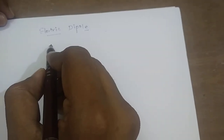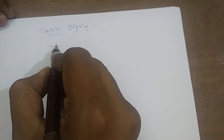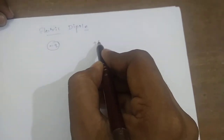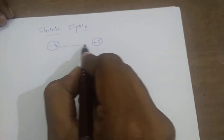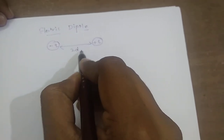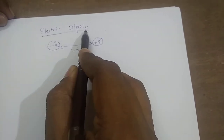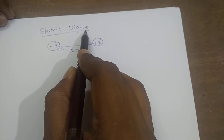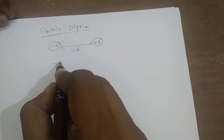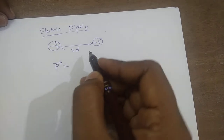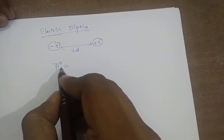First of all, some introduction. What is called an electrical dipole? It is a combination of two equal and opposite charges. Let us suppose this one is minus Q charge and this one is plus Q charge, and they are separated by a very small distance — let us suppose the distance is 2D. Then this constitutes an electric dipole, and there is a physical quantity related with it, known as dipole moment.